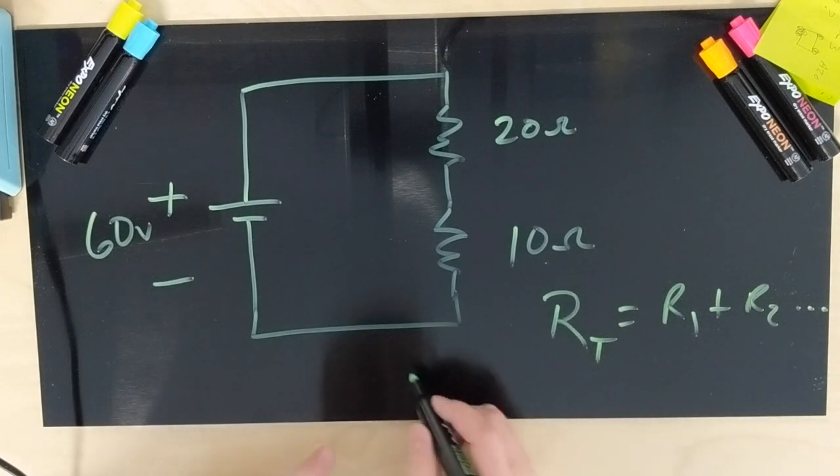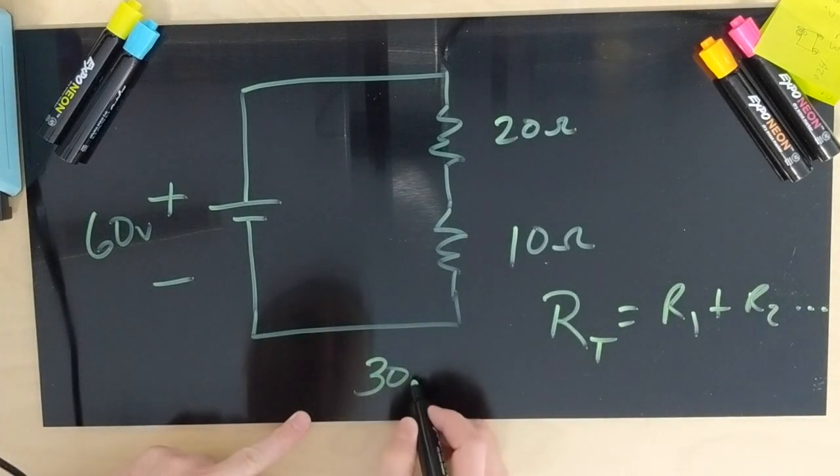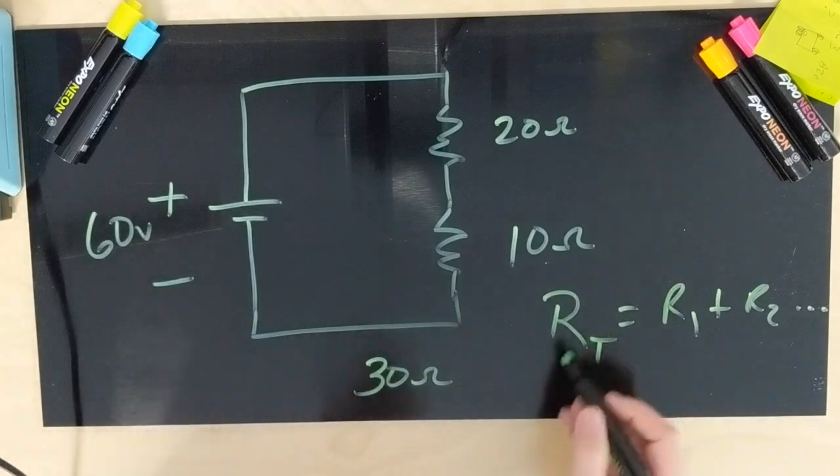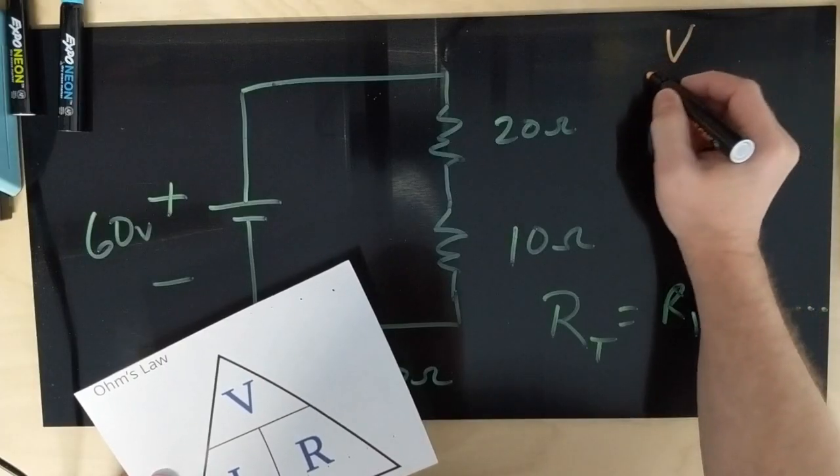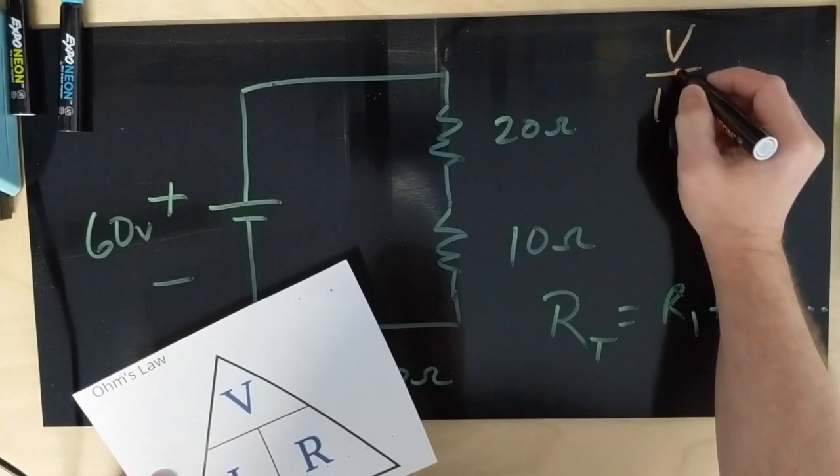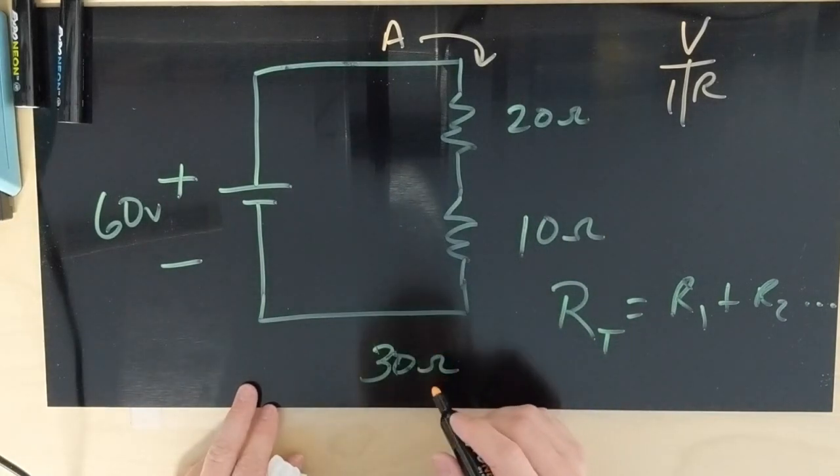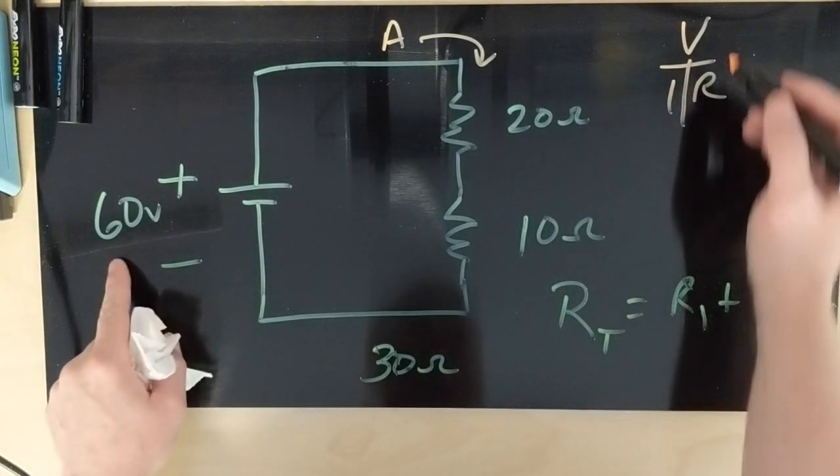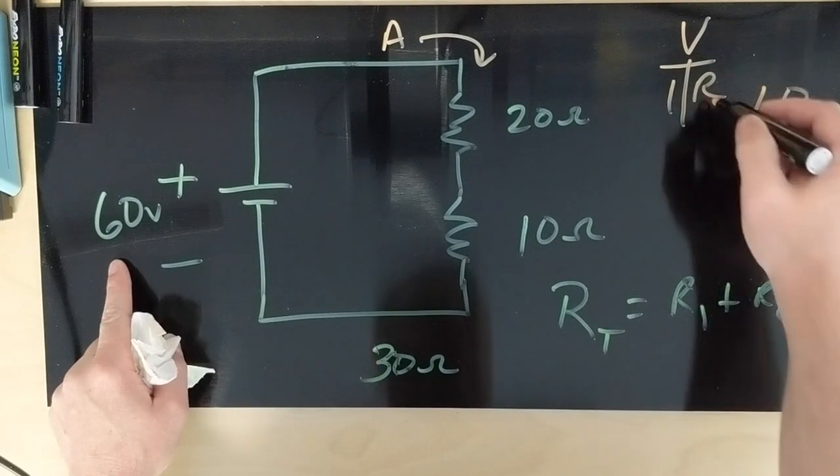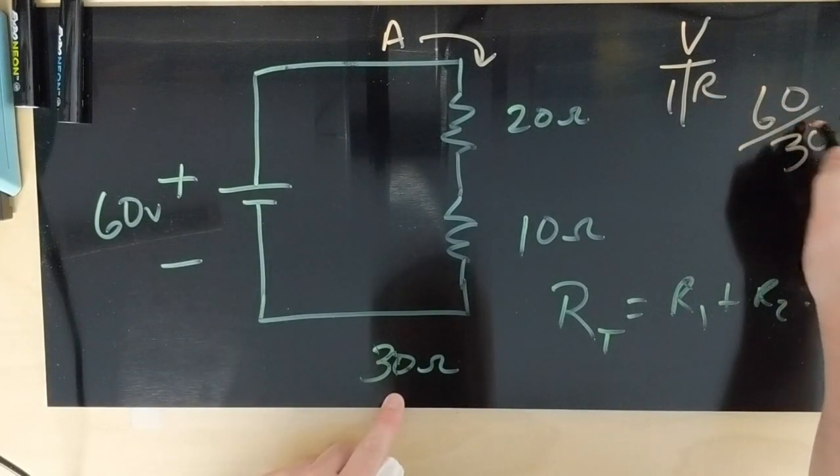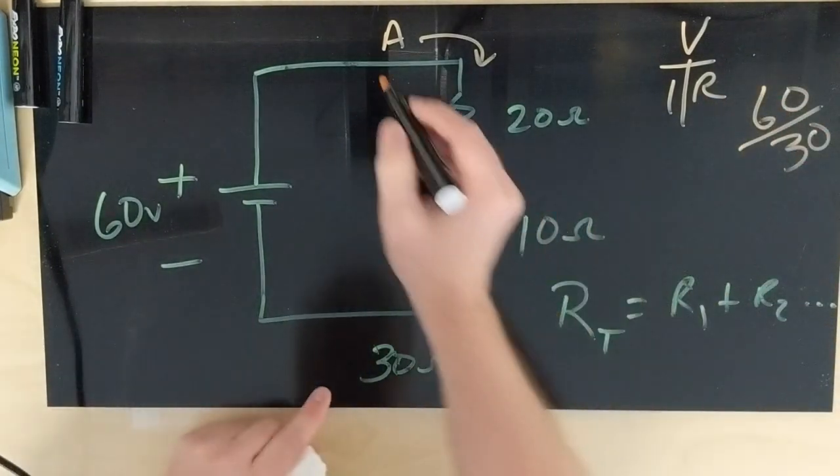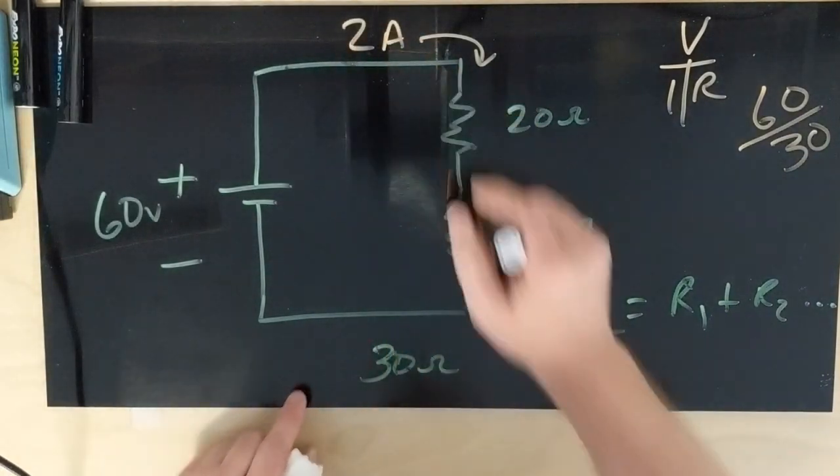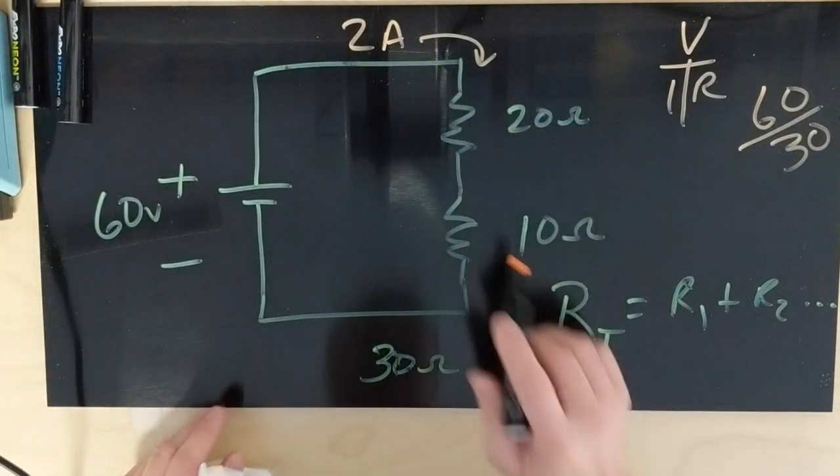Our RT is going to be 30 ohms—that's our total resistance. V over I times R. What is our current going to be? Well, 60 volts divided by our resistance, which is 30, is going to give us 2 amps. So our total current through this is going to be 2 amps.